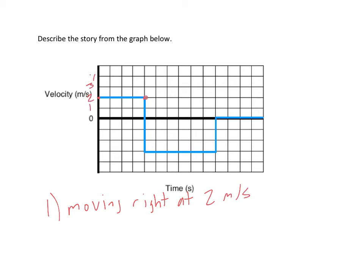And then all of a sudden, it goes from moving right to, this is a negative velocity. Now all of a sudden, it's moving left. So it goes from moving right to moving left. This is impossible to do in an instant, but assuming it is possible, now it's moving left at three. So it goes from moving right at two to moving left at three, and it does that for some time.